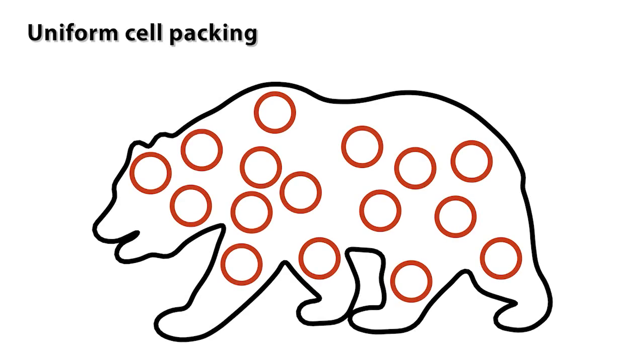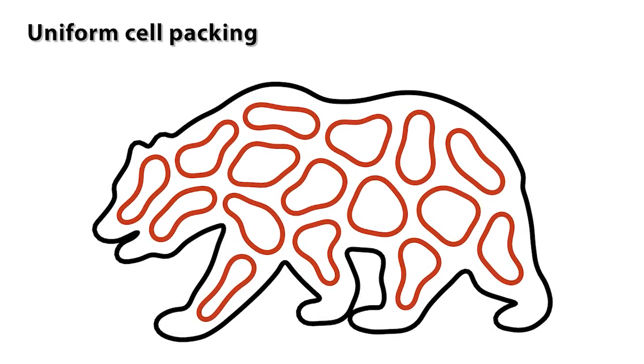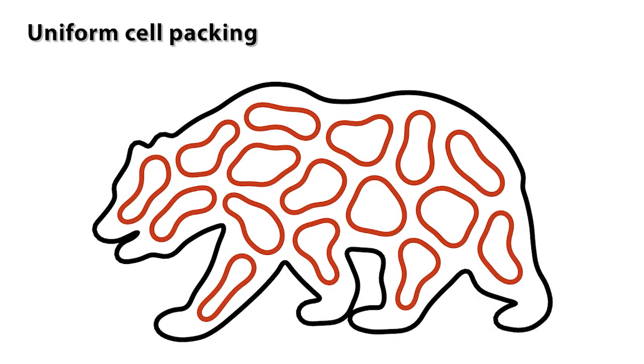In this case, starting from an arbitrary arrangement of circles, we can grow and pack a collection of uniformly distributed Voronoi-like cells within the boundary.